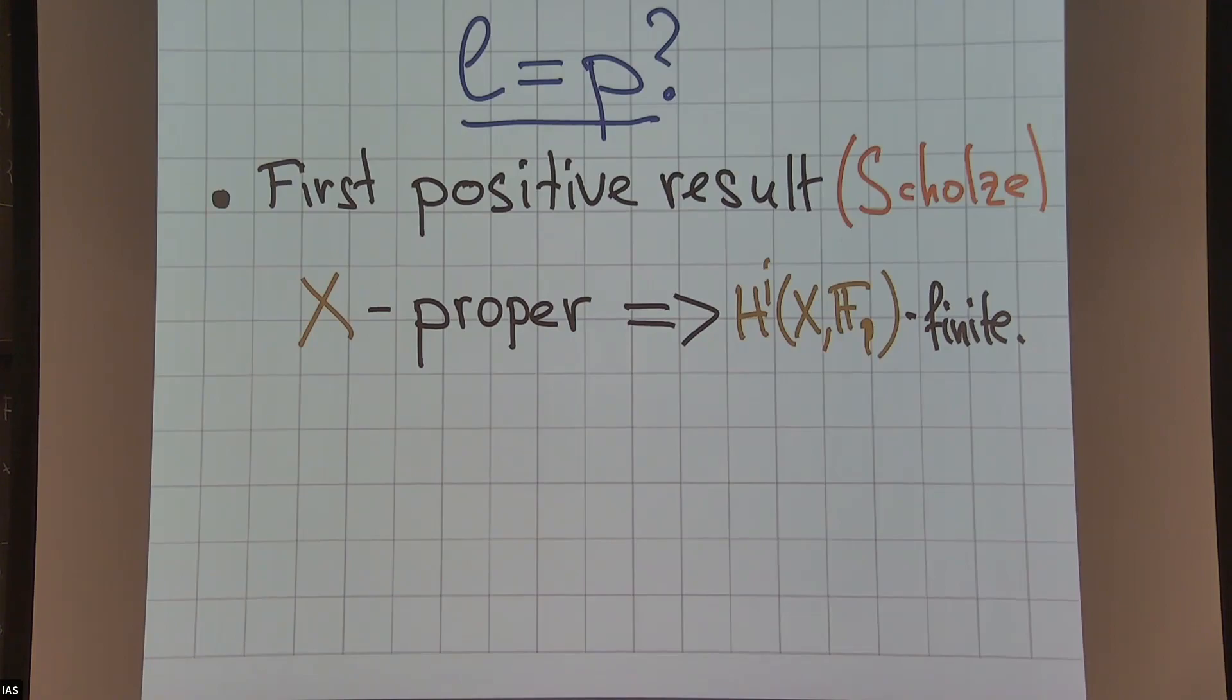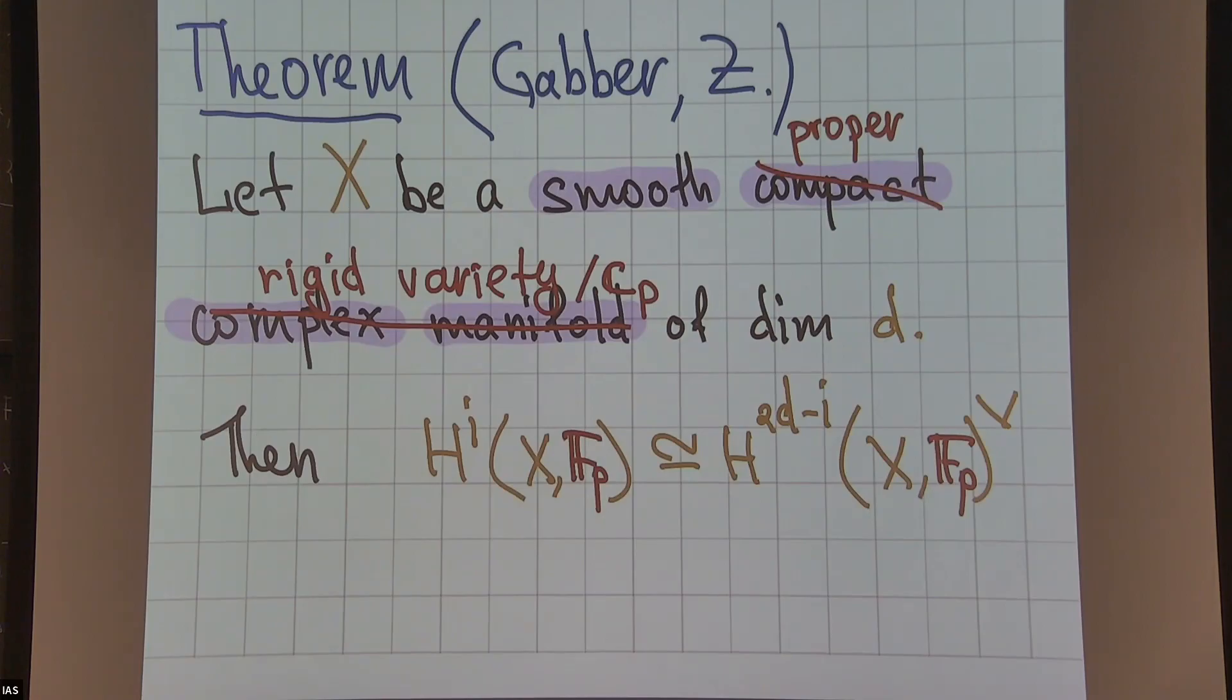One of the first positive results in this direction was a theorem of Scholze. An intermediate step in his paper shows that if X is proper, then these groups are still finite, so at least it makes sense as F_p vector spaces. Locally they are infinite in this p-adic world, but globally they are still finite. The local analog of Poincaré duality doesn't make sense because the groups are just infinite and there's no chance to have a perfect pairing. But still, since the space is proper, we should ask the question: is there Poincaré duality for p-adic coefficients on proper smooth varieties over C_p? And the answer is yes.